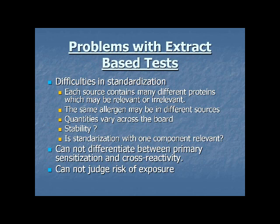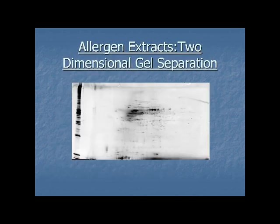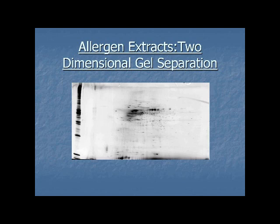Extract-based tests have probably been the biggest problem in the in vitro world. Different extracts have different amounts of proteins, and we don't know a lot about stability. This makes a very strong case for component-resolved diagnosis. A two-dimensional gel of an allergen extract reveals almost 200 different proteins — this is what's attached to the solid phase of IgE assays. We obviously need to do a better job with this.